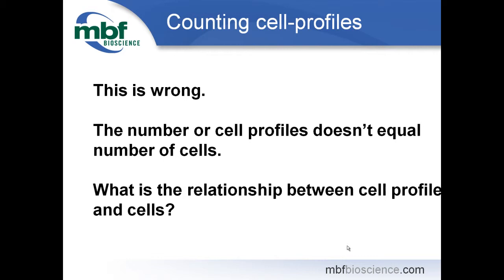There is a relationship between cell profiles and cells, but it's not a simple one. The size of the cell will affect how many cell pieces or profiles you get, as will the orientation of the cell and the orientation of the tissue. So your cell number estimate can be affected even by the angle at which you decide to section your tissue. Not only does the number of cell pieces not equal the number of cells, but if we section this idealized volume through a different plane, the count changes.